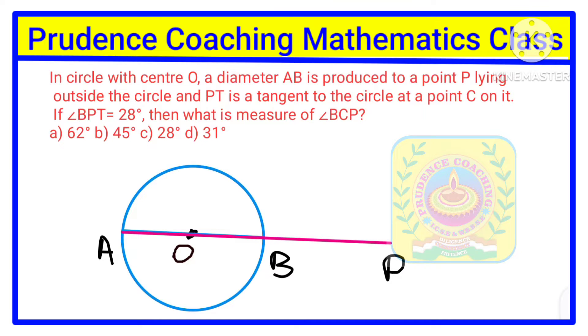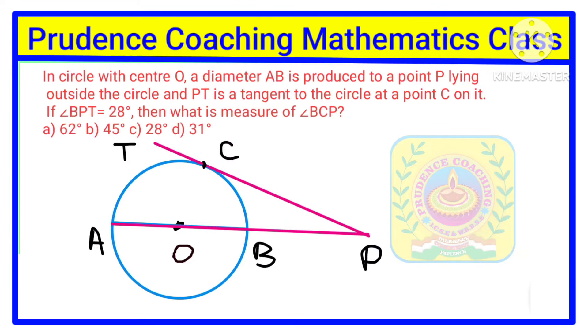Point P is outside the circle, and PT is the tangent to the circle. This tangent PT meets the circle at point C, where the tangent touches the circle.